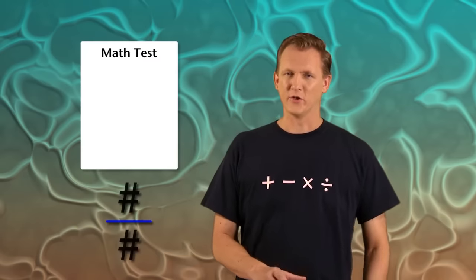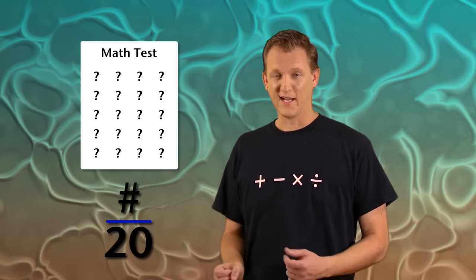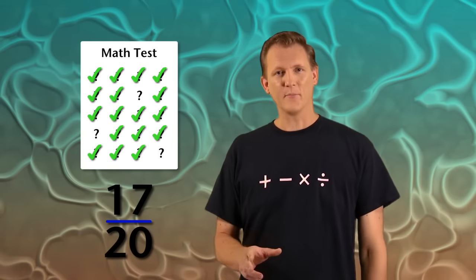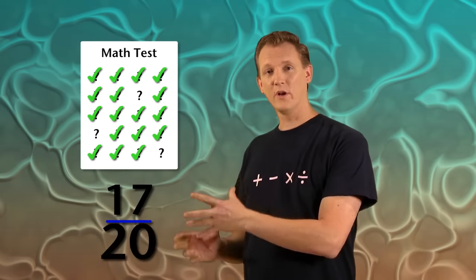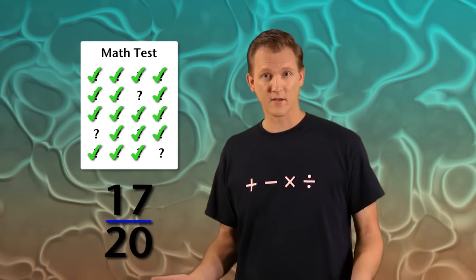Let's say you take a math test, and there's twenty questions on the test, and you get seventeen of those questions right. That means that you got seventeen over twenty, or seventeen-twentieths of the questions right.